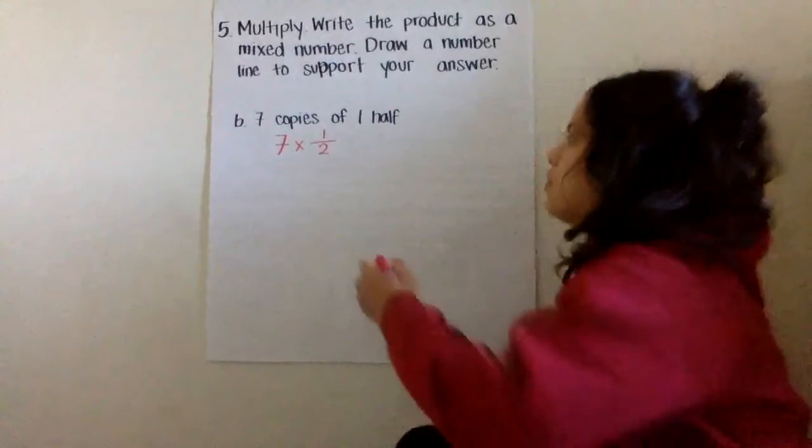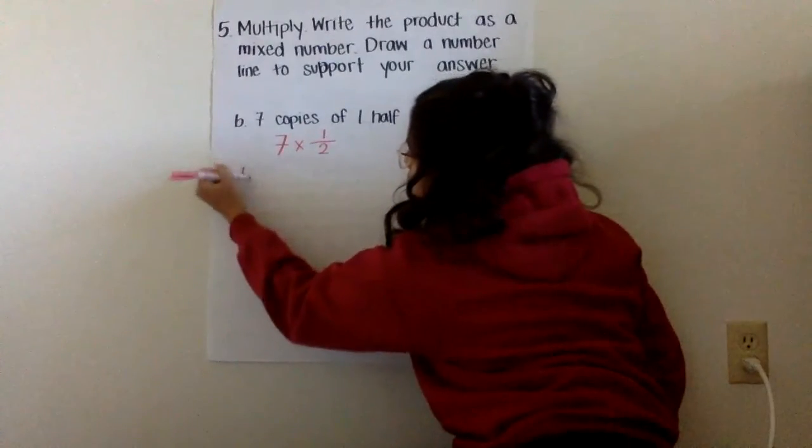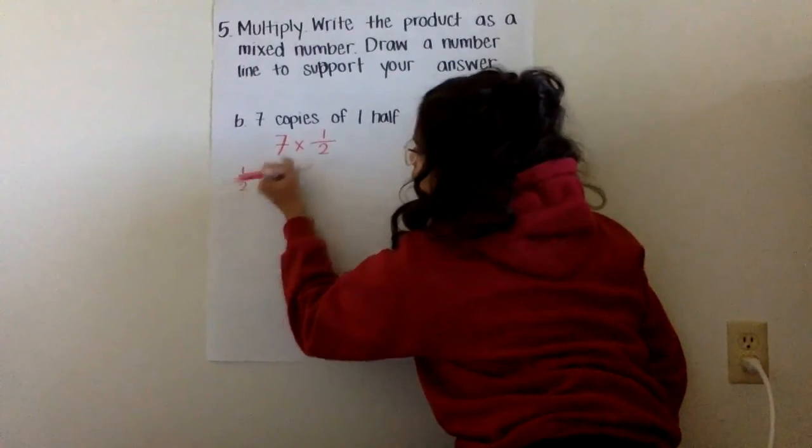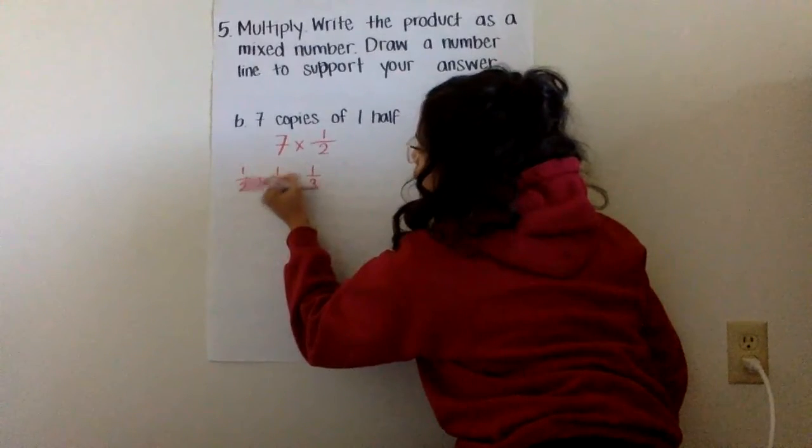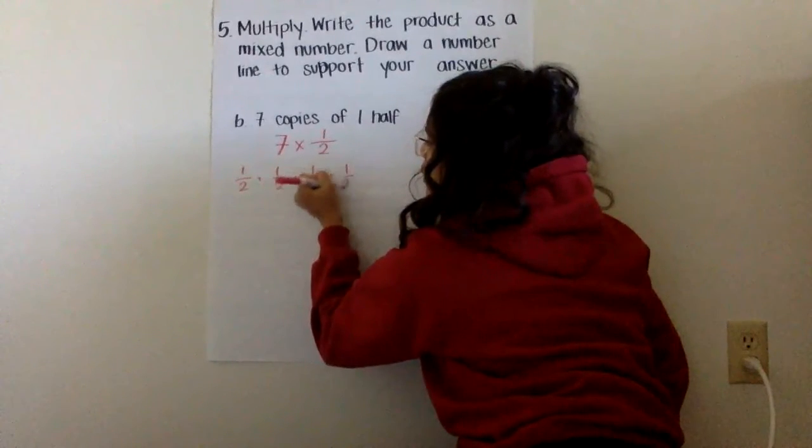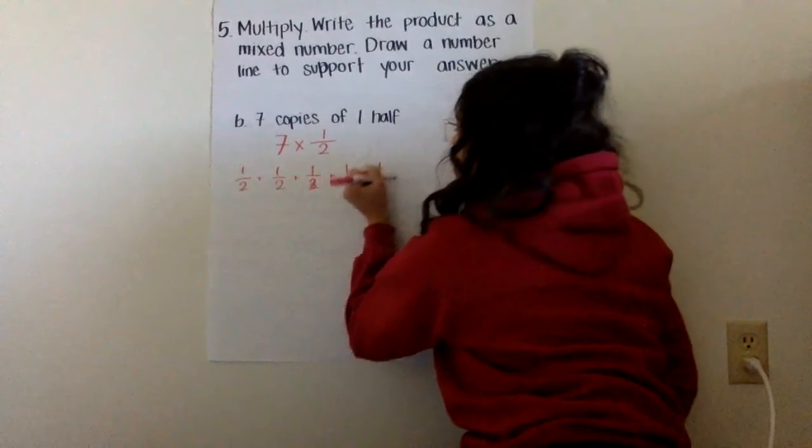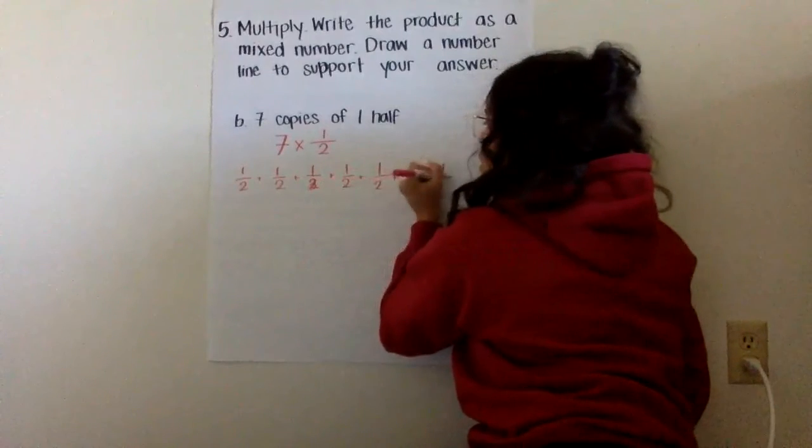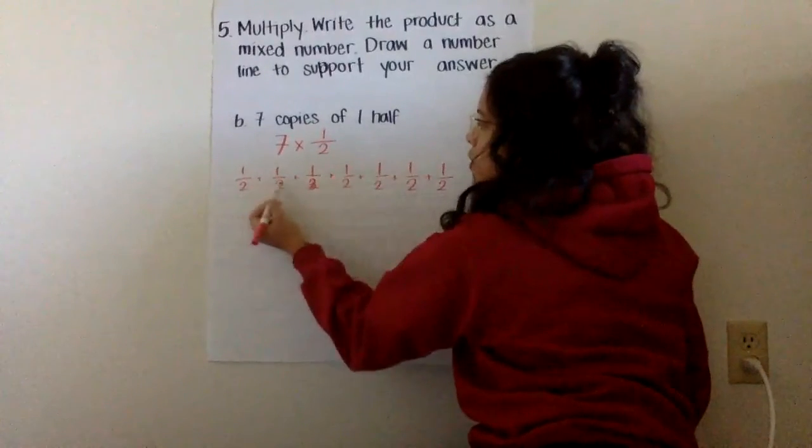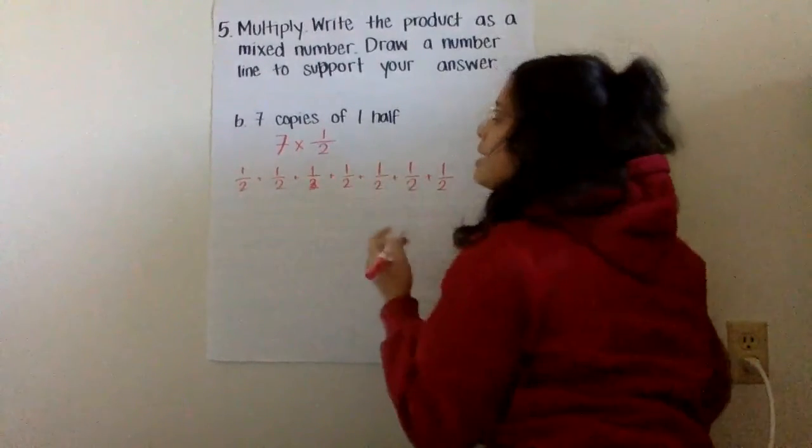So if I do one half plus one half over and over again, I have one, two, three, four, five, six, seven there.